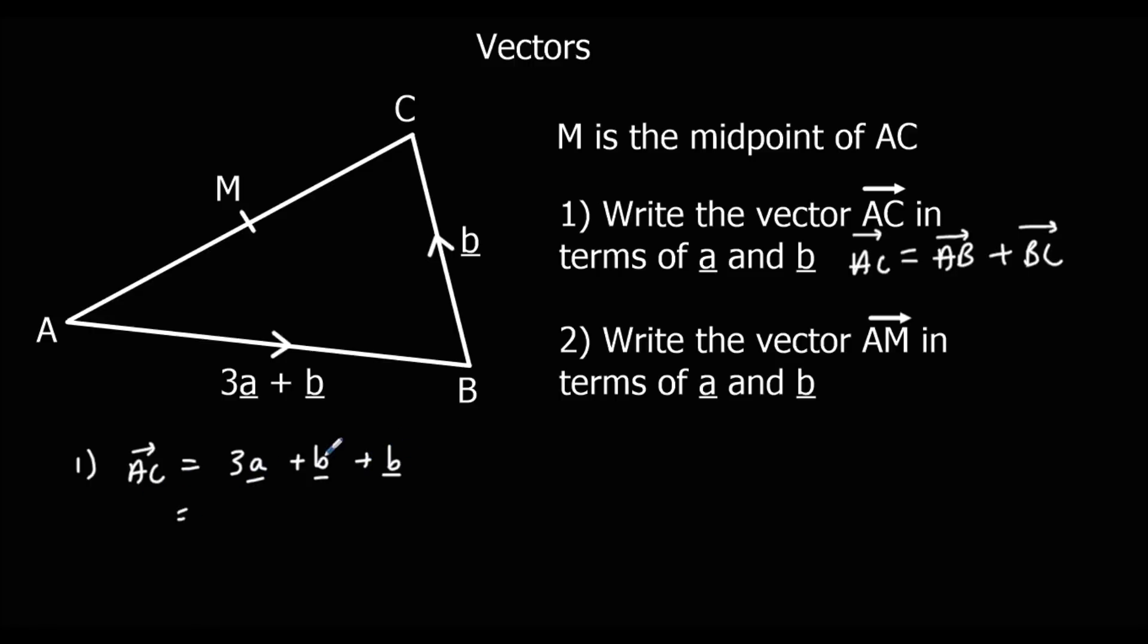And then B to C is called b. So I've got 3a plus b plus another b, which I can simplify to 3a and 2b.